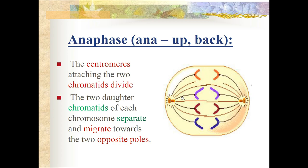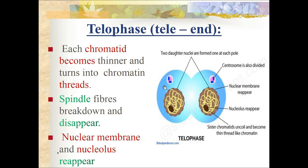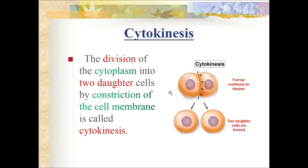During telophase, each chromatid becomes thinner and turns into chromatin threads. Spindle fibers break down and disappear. The nuclear membrane and nucleolus reappear. Cytokinesis is the division of the cytoplasm into two daughter cells by constriction of the cell membrane - a furrow forms and deepens until two daughter cells are formed.